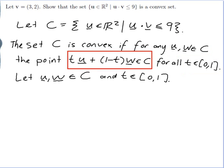What I want is for tu + (1-t)w to be in C and the only way to tell that is to use the definition of C which is that u dot v is less than or equal to 9. So this vector dot v should be less than or equal to 9 if it's going to be in my set C.